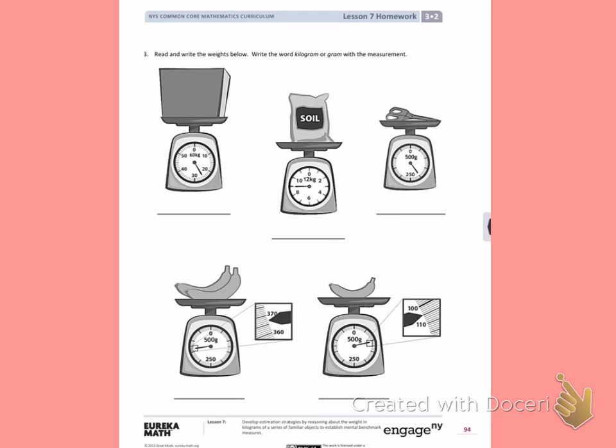This is Module 2, Lesson 7. Today's objective was to develop estimation strategies by reasoning about the weight in kilograms of a series of familiar objects to establish mental benchmark measures.